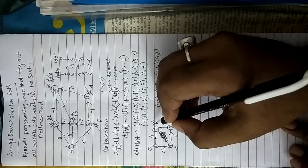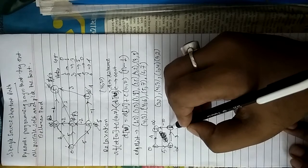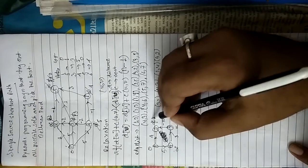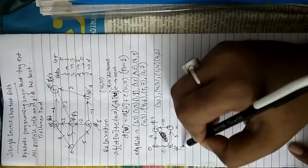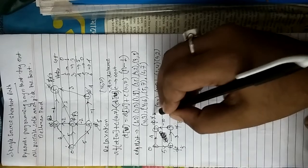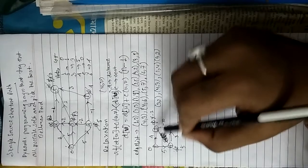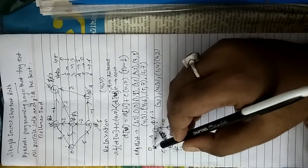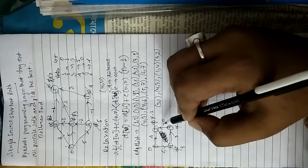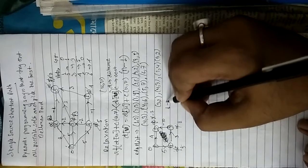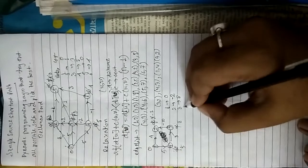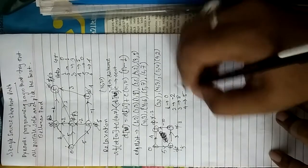Starting from node 1, set to zero, all others infinity. From node 3 to 2: zero plus four equals four. Node 1 to 2 with cost five: zero plus five equals five — wait, it becomes eight. From node 2 with minus two edge. After iteration: four plus zero is four; zero plus five is five; five plus three is eight; eight minus ten equals minus two.